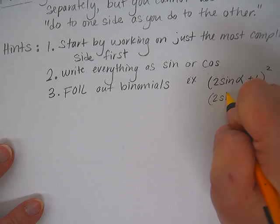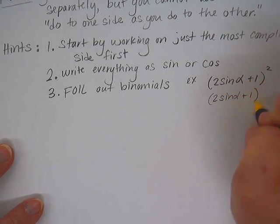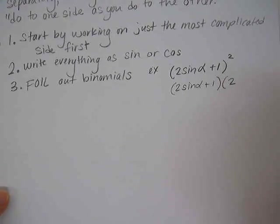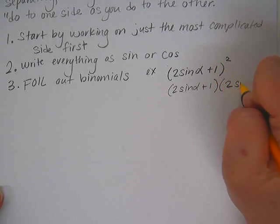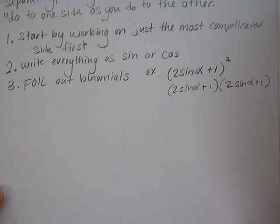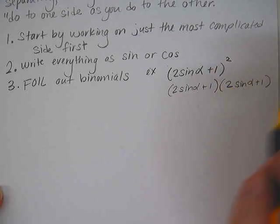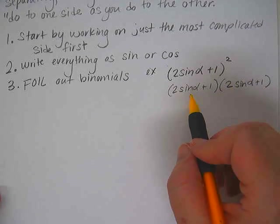you should go ahead and multiply - rewrite it so that it's all written out so you don't get lost. Squaring it would mean that entire thing times itself, and then you FOIL it.